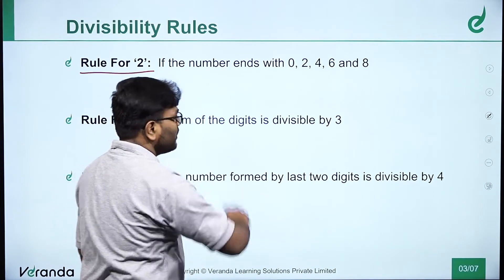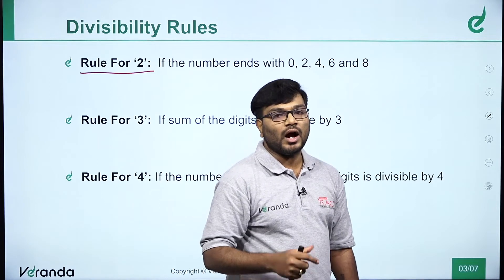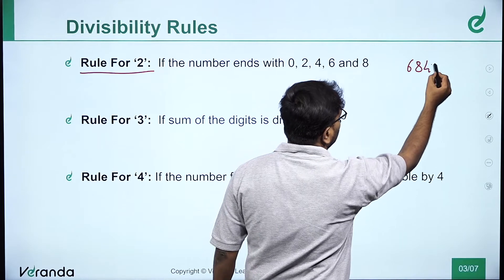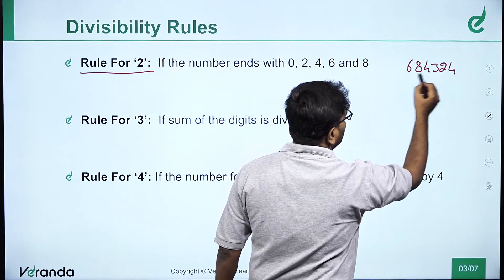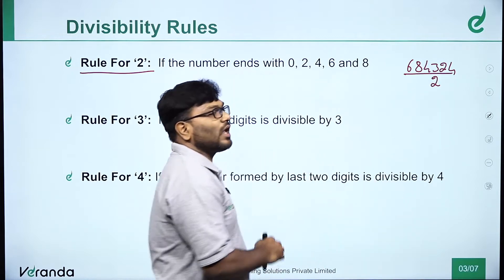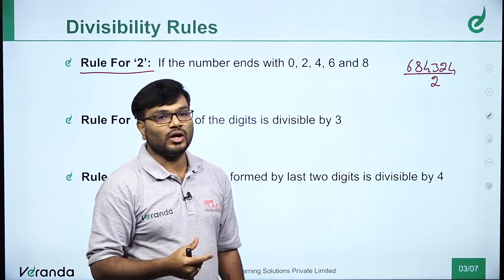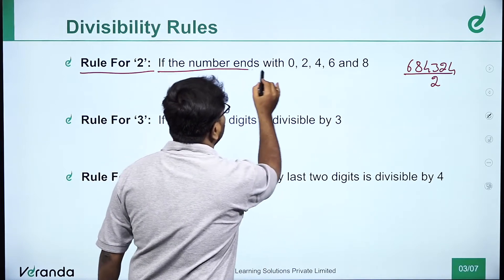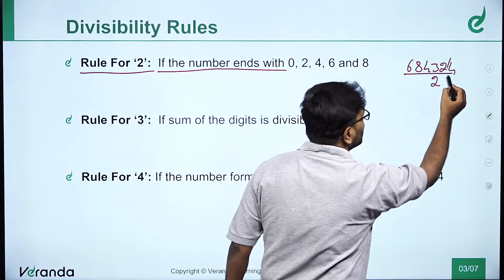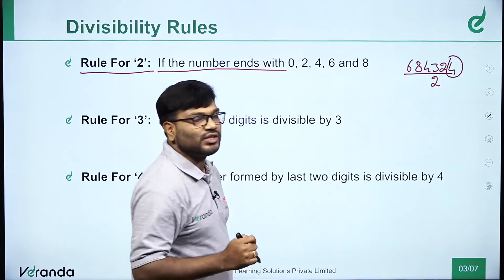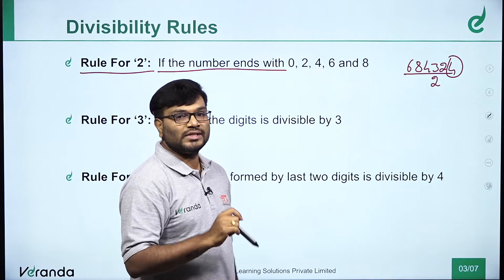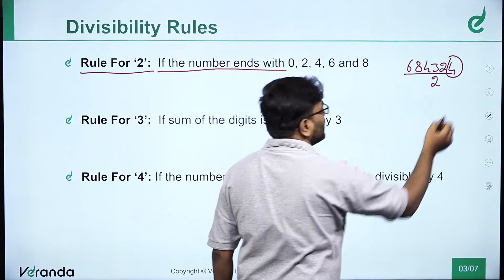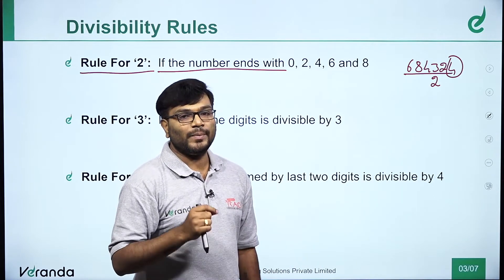Rules for 2. Any number divisible by 2 — for example, 6, 8, 4, 3, 2, 4 divided by 2. Just check if the number ends with the unit place. If any number ends with 0, 2, 4, 6, 8 — the even numbers — then that number is definitely divisible by 2.